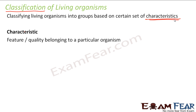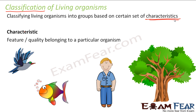Let us take some examples. When we think of birds, a characteristic closely related to birds is flying — birds can fly. Fishes can swim, so swimming is a characteristic of fishes. Humans have one nose, two eyes, and five fingers — these are characteristics of human beings. Trees are immobile; trees do not move from one place to another, so that is a characteristic of trees.